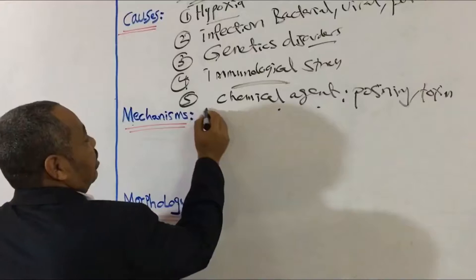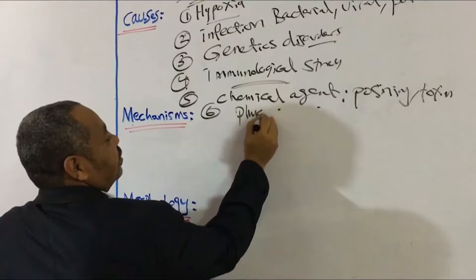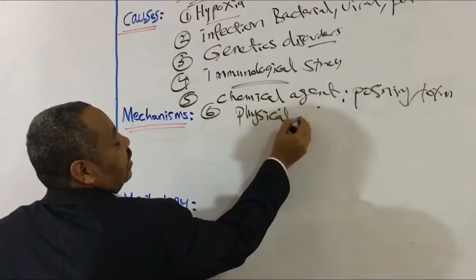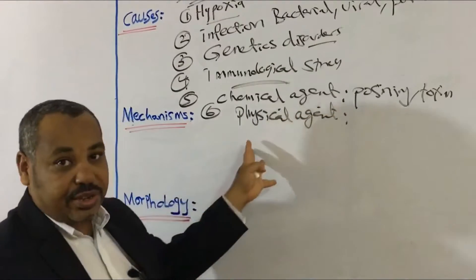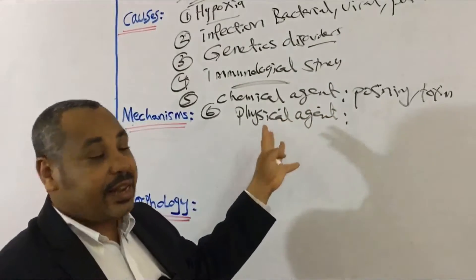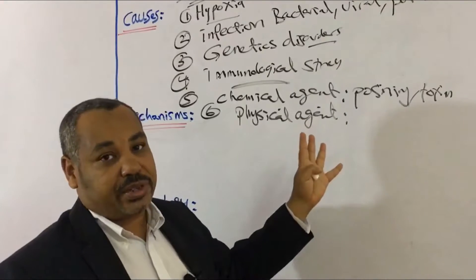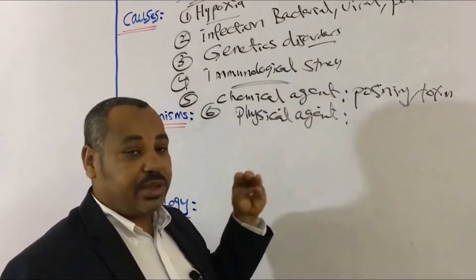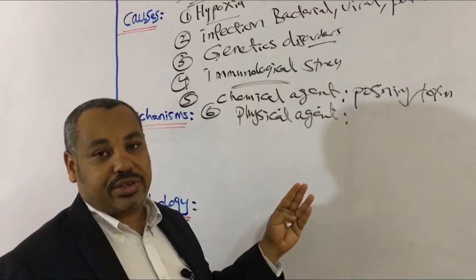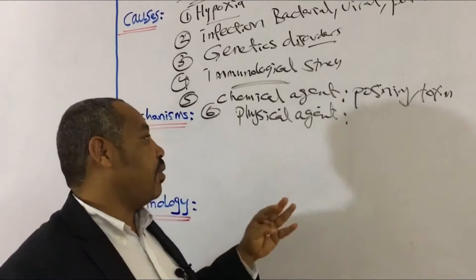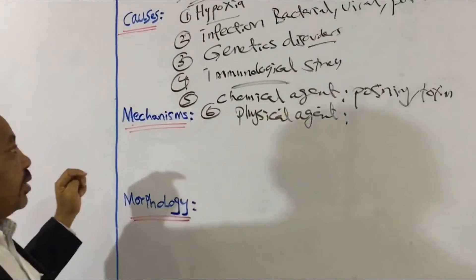Number six is physical agents, like temperature, electricity, and radiation — whether atomic radiation or X-ray radiation. All of these are also a stress on the cell.